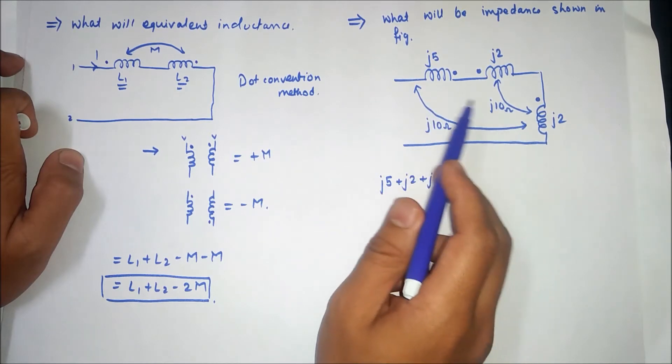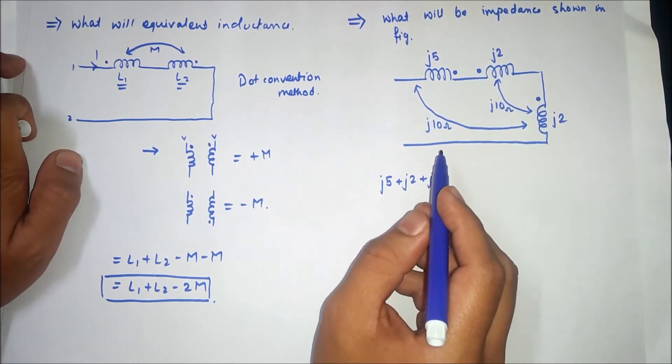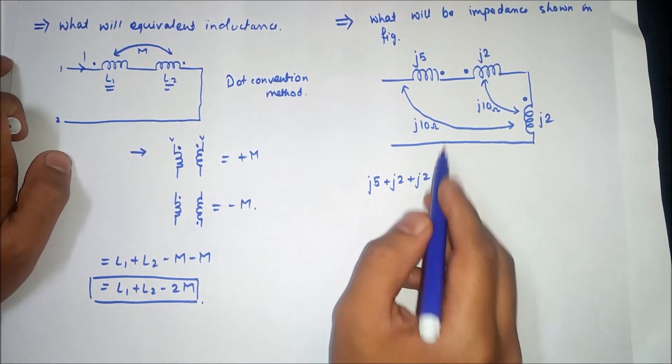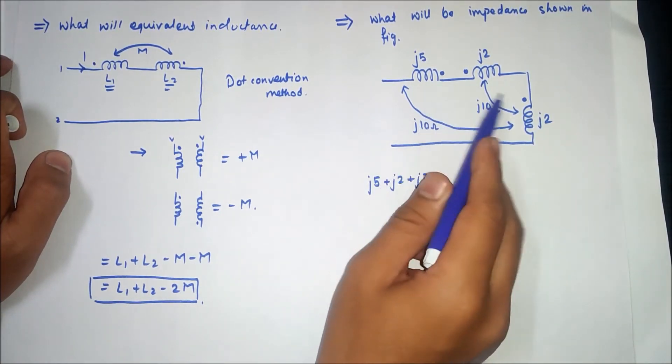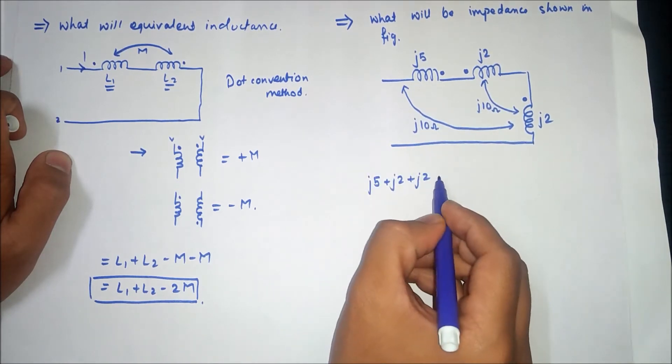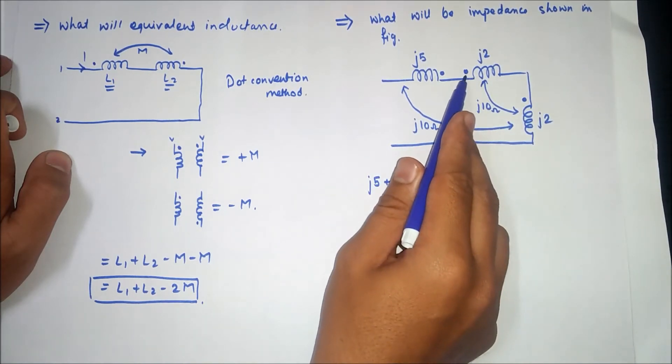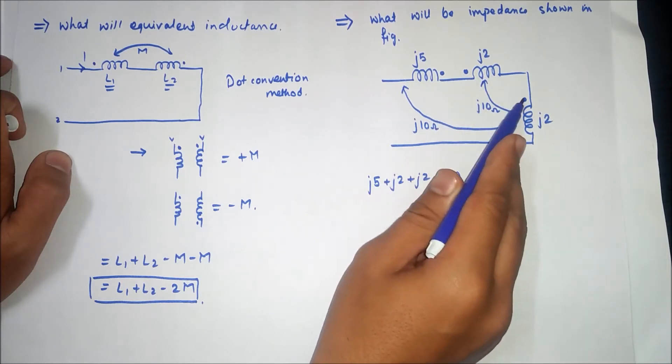So inductance will be J5 plus J2 plus J2. Now we will see the mutual inductance of J5, J2, and J2, J2. So mutual inductance of J5 - its direction and its direction of dot way is opposite, so it will be minus J10.